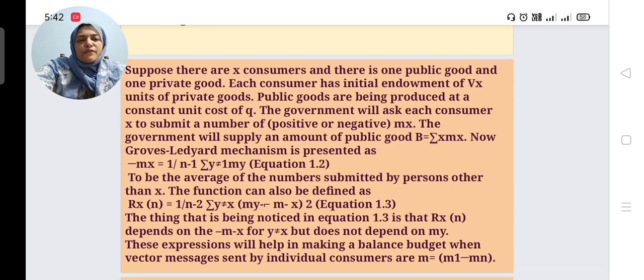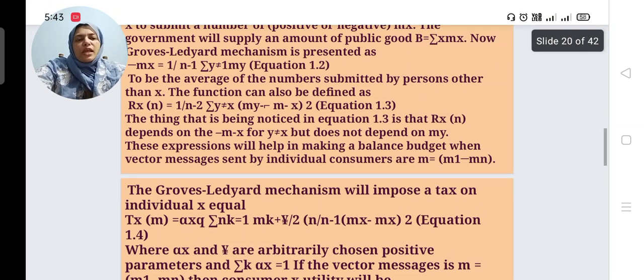The function can also be defined as r(x,n) = 1/(n-2) × summation (y≠x) [my - m̄(-x)]², considered as equation 1.3. The thing that is being noticed in equation 1.3 is that r(x) function of n depends on m̄(-x) for y≠x but does not depend on my. These expressions will help in making a balanced budget when vector messages sent by individual consumers are m = (m1,...,mn).